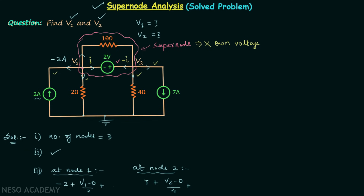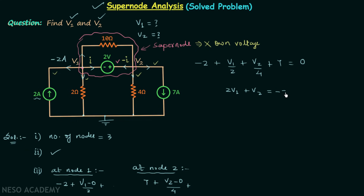Applying KCL at the super node: the sum of all currents leaving equals 0. The 2-ampere source contributes minus 2, plus V1 divided by 2 from the 2-ohm resistor, plus V2 divided by 4 from the 4-ohm resistor, plus 7 from the 7-ampere source, all equal to 0. Simplifying this gives 2V1 plus V2 equals minus 20. This is equation number 1.